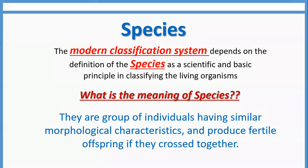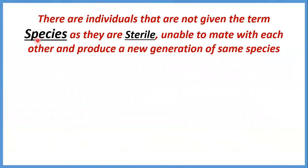لقينا إن في مجموعة من الindividuals ما بنقدرش نديهم كلمة species، عشان بيكونوا sterile — unable to mate with each other and produce a new generation of the same species. عشان كده بنقول إن هما دول مش بياخدوا term species.